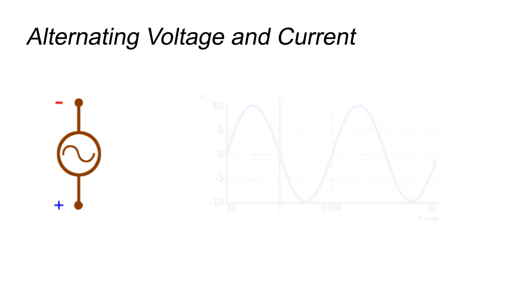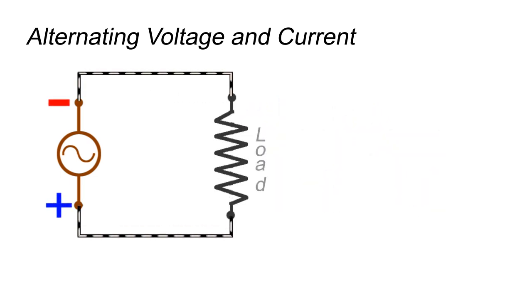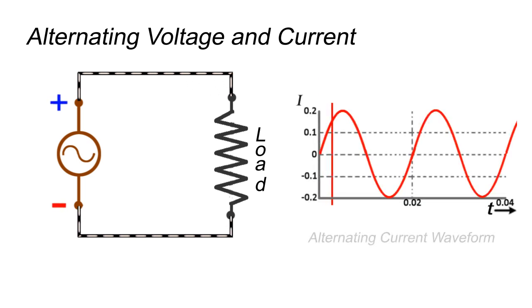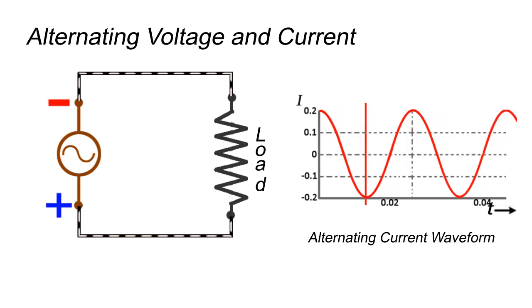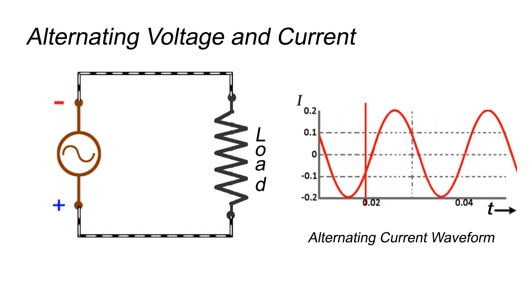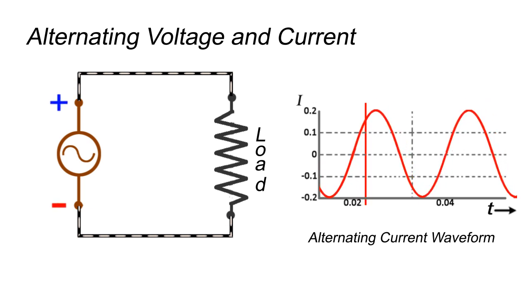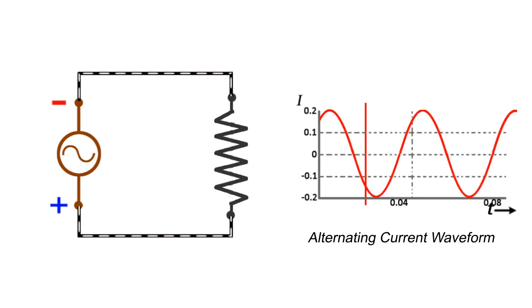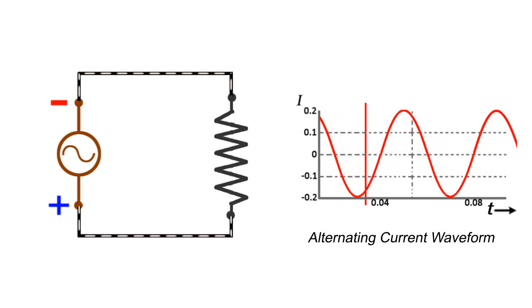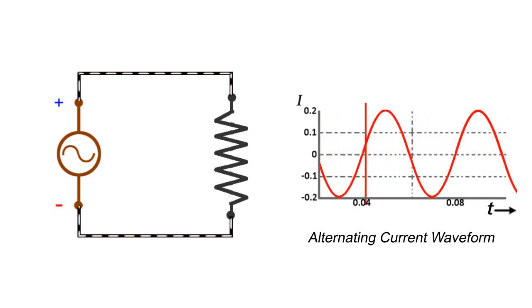Now, if we apply this alternating voltage to an electric load, alternating current gets set up in the circuit. Flow of current follows the nature of applied voltage. This changing current is known as alternating current.